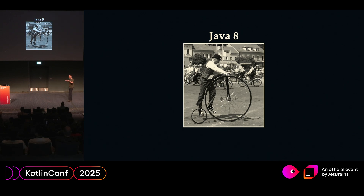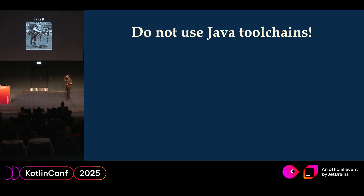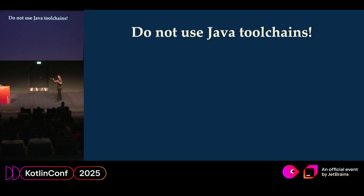I'm going to make a few recommendations in this presentation. The first one is to not use Java toolchain. Every time you use a Java toolchain, what it's doing under the hood is downloading an older version of Java.